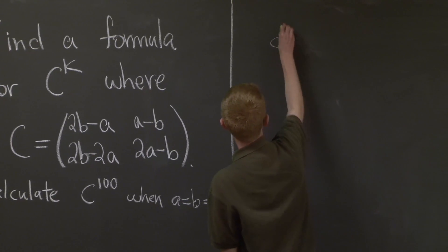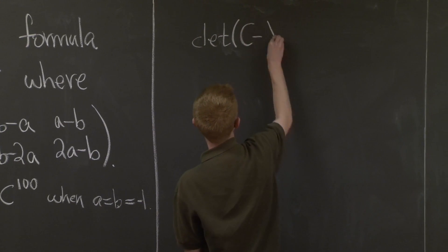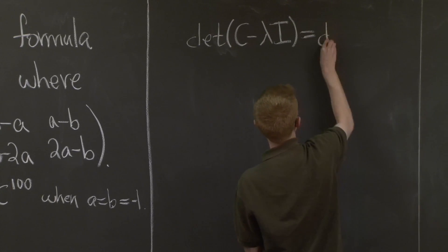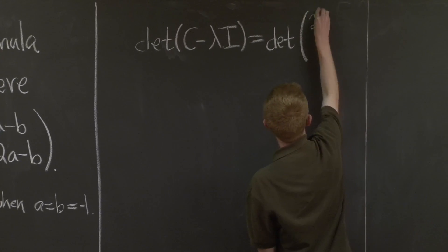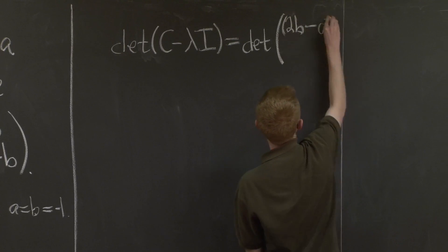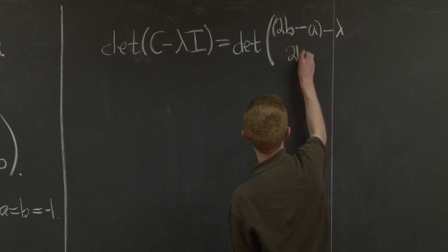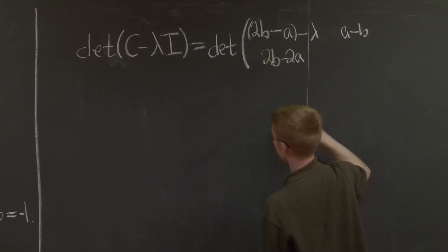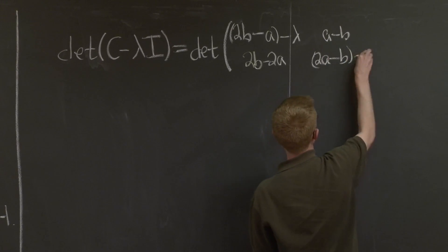We compute the determinant of C minus lambda I, which is just the determinant of this matrix: 2B minus A minus lambda, 2B minus 2A, A minus B, and 2A minus B minus lambda.